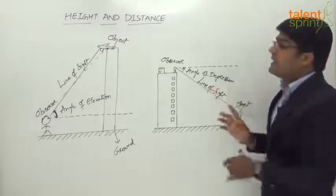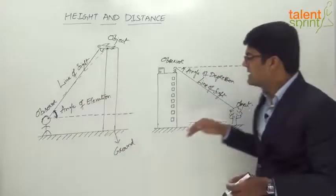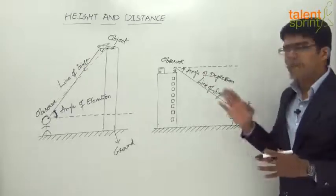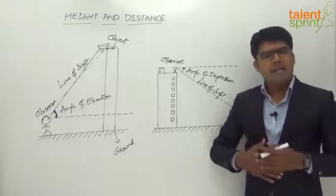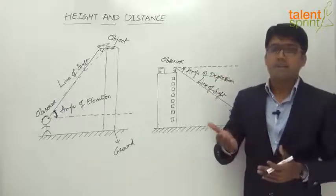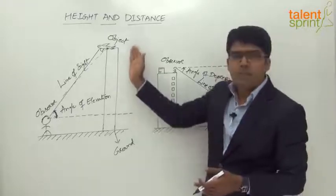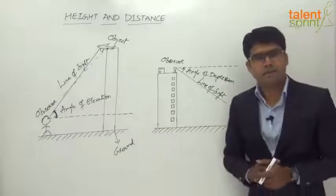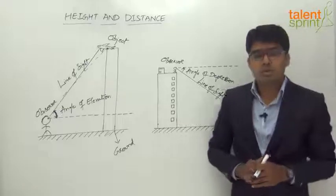To summarize: in angle of elevation, the horizontal is below the line of sight, whereas in angle of depression, the horizontal is above the line of sight. Line of sight is the line joining the eye of the observer with the object. Angle of elevation and angle of depression are both the angle between the line of sight and the horizontal — the difference is whether the object is above or below the horizontal.